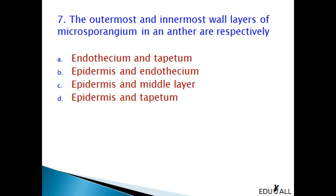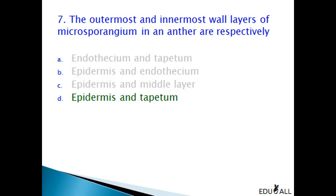The outermost and the innermost wall layers of the Microsporangium in an anther are respectively: endothesium and tapetum; epidermis and endothesium; epidermis and middle layer; or epidermis and tapetum? We know the four layers of Microsporangium are epidermis, endothesium, middle layer, and tapetum. The right answer is D — epidermis and tapetum, where the outermost layer is the epidermis and the innermost layer is tapetum.